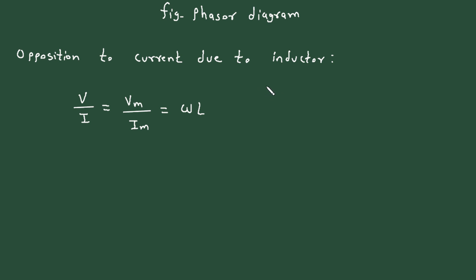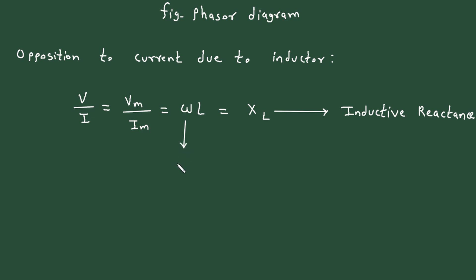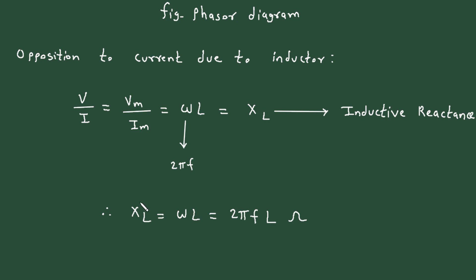Here ω is the angular frequency equal to 2πf, with units of radians per second, and L is the inductance in henries. Therefore XL equals ωL equals 2πfL, and its unit is ohms because it represents opposition to the flow of current.